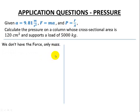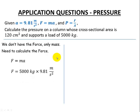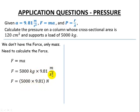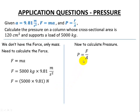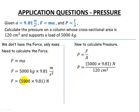We don't have force, only mass, so we calculate it. Force equals m times a: our mass is 5,000 kilograms and our gravitational acceleration is 9.81 m/s². Keeping the numbers together, kilogram·meters per second squared are considered newtons. So our force is 5,000 × 9.81 newtons.